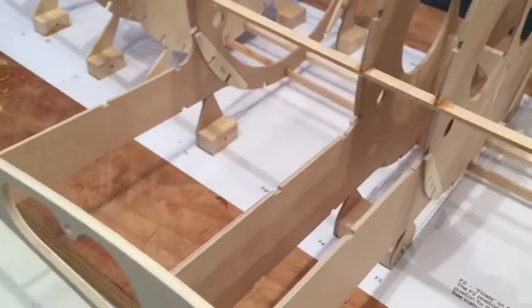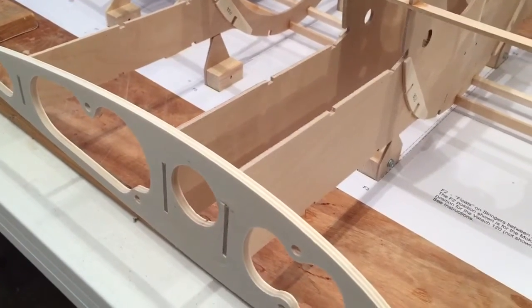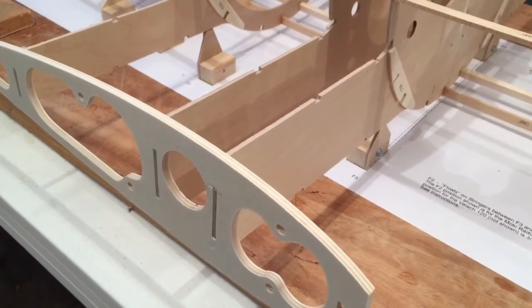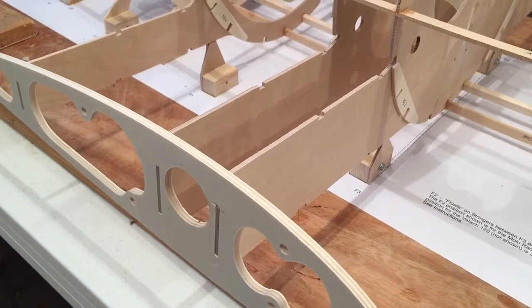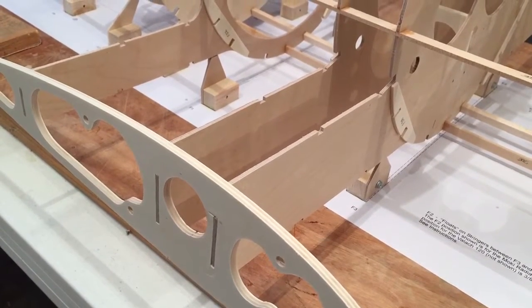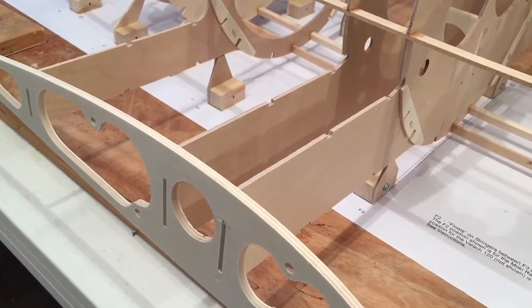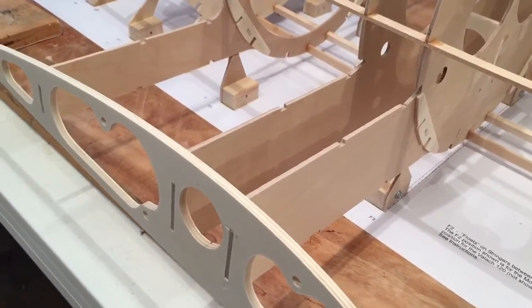Over here I've got the stub wing ribs SW3. They are not glued, they're just there for alignment purposes, just to make sure everything is right as we go.